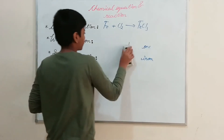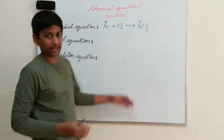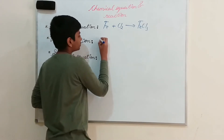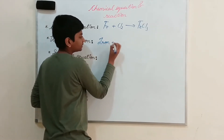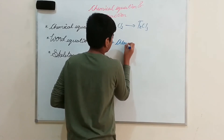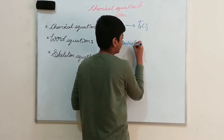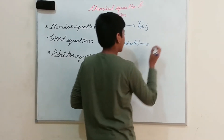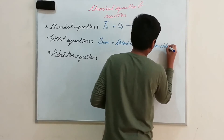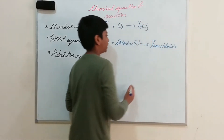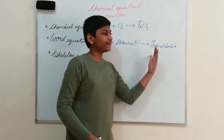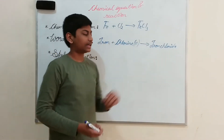Taking the same example: Fe is iron, so I write 'iron plus chlorine' — which is Cl₂, so I write chlorine with a subscript 2 in brackets. And it gives us iron chloride. So if you notice, if there is oxygen, it becomes iron oxide; if sulphur, it becomes iron sulphide; and for chlorine, it is iron chloride.